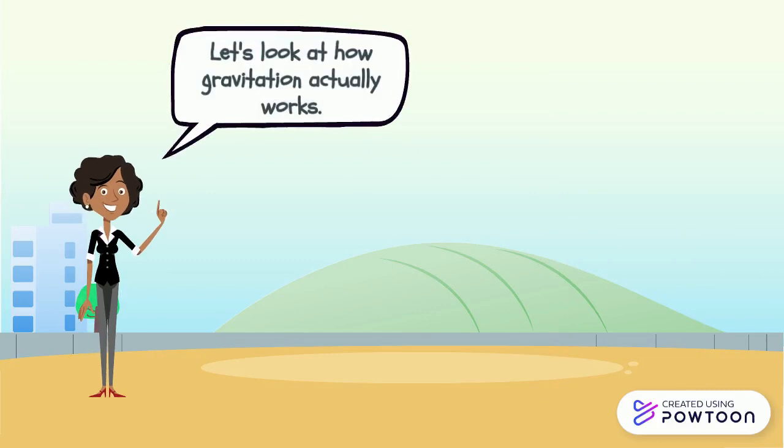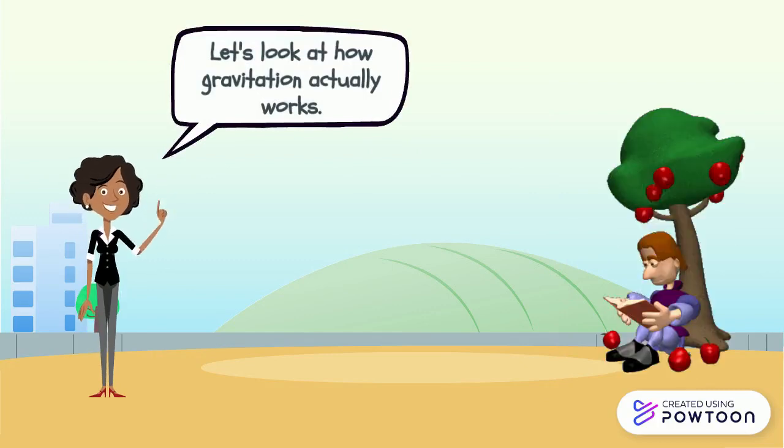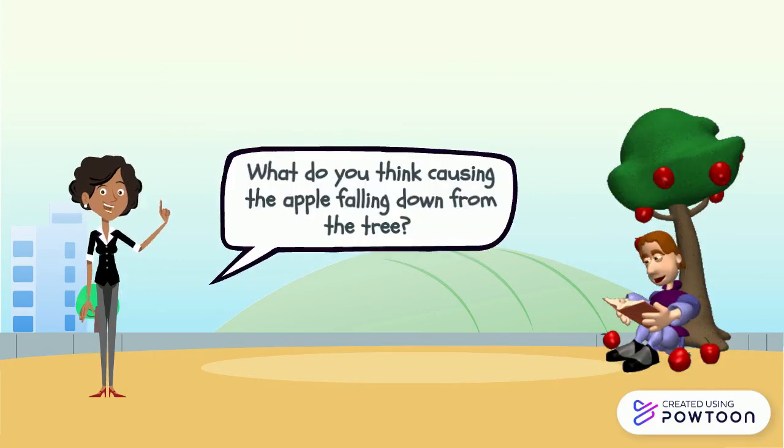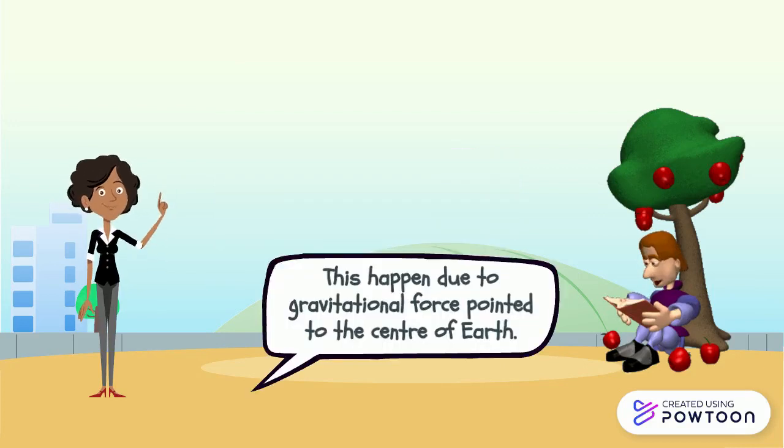Let's look at how Gravitation actually works. As you can see, what do you think causing the apple falling down from the tree? This happened due to the gravitational force pointed to the centre of the Earth.